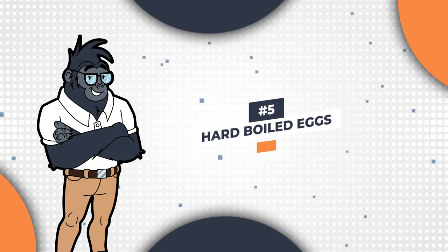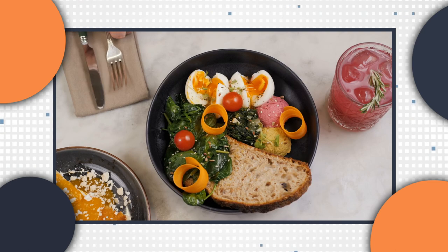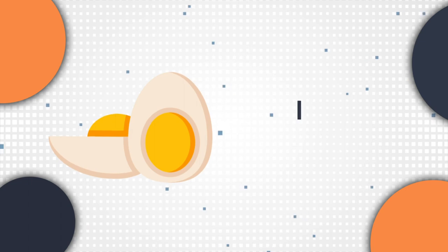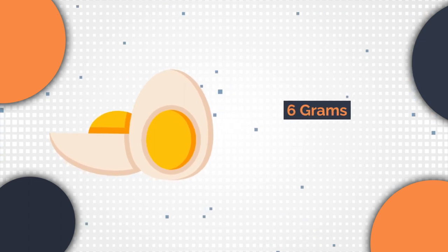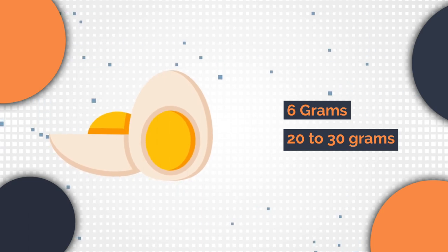Number five, hard-boiled eggs. Not only are they simple to make, just boil for five minutes, but they are also incredibly portable, making them the perfect snack to take with you on the go. And with six grams of protein per large egg, it's easy to add 20 to 30 grams of protein to your meals simply by including a few hard-boiled eggs.